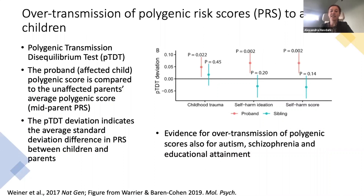Polygenic transmission disequilibrium tests, or PTDT, have identified an over-transmission of polygenic scores from parents to autistic children. PTDT is a family design which is robust to population stratification and several other factors which may bias genetic correlations. It involves comparing an affected child's polygenic score to their unaffected parents' average polygenic score, called the mid-parent PRS. Here is an example from the Warrior and Baron-Cohen study, where they found a higher PRS for self-harm ideation and behavior in autistic children compared to their parents, shown in red, whereas this PTDT deviation was not observed for unaffected siblings, shown in blue.